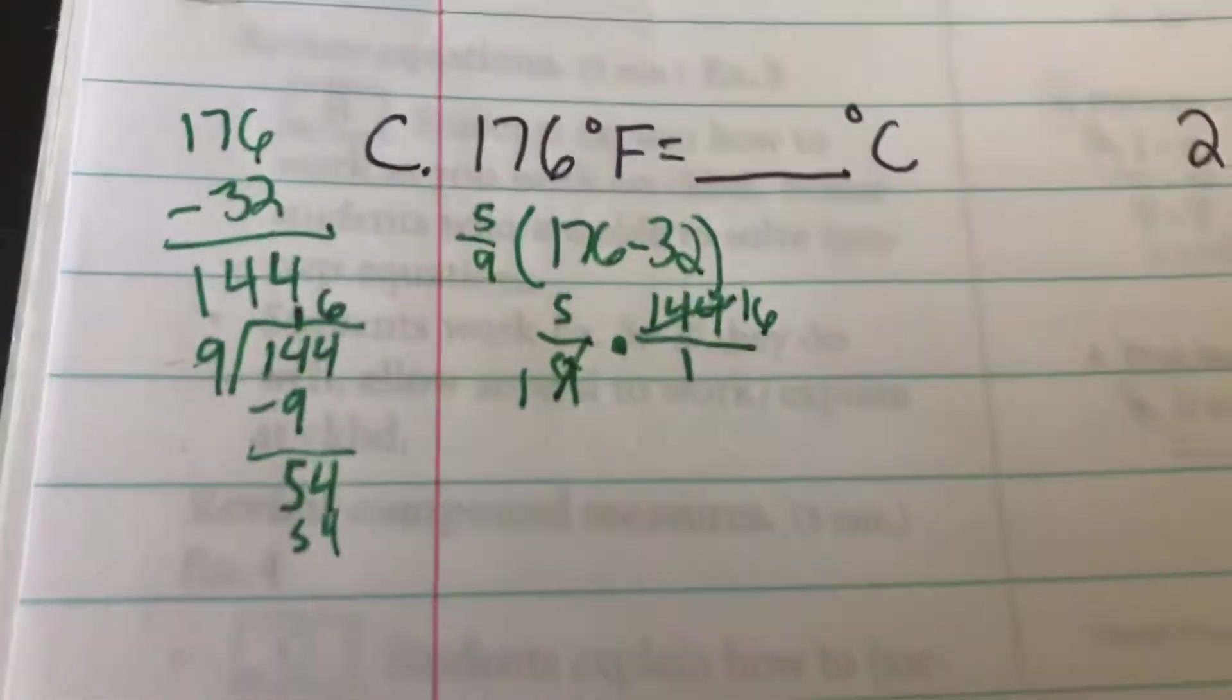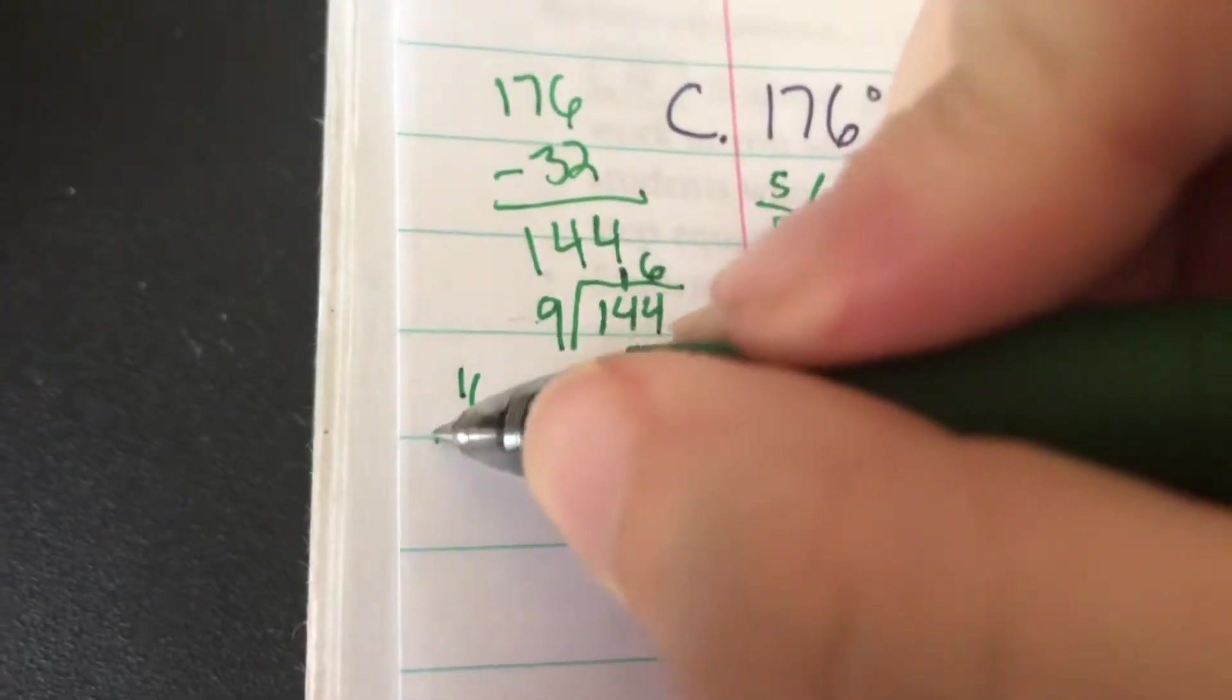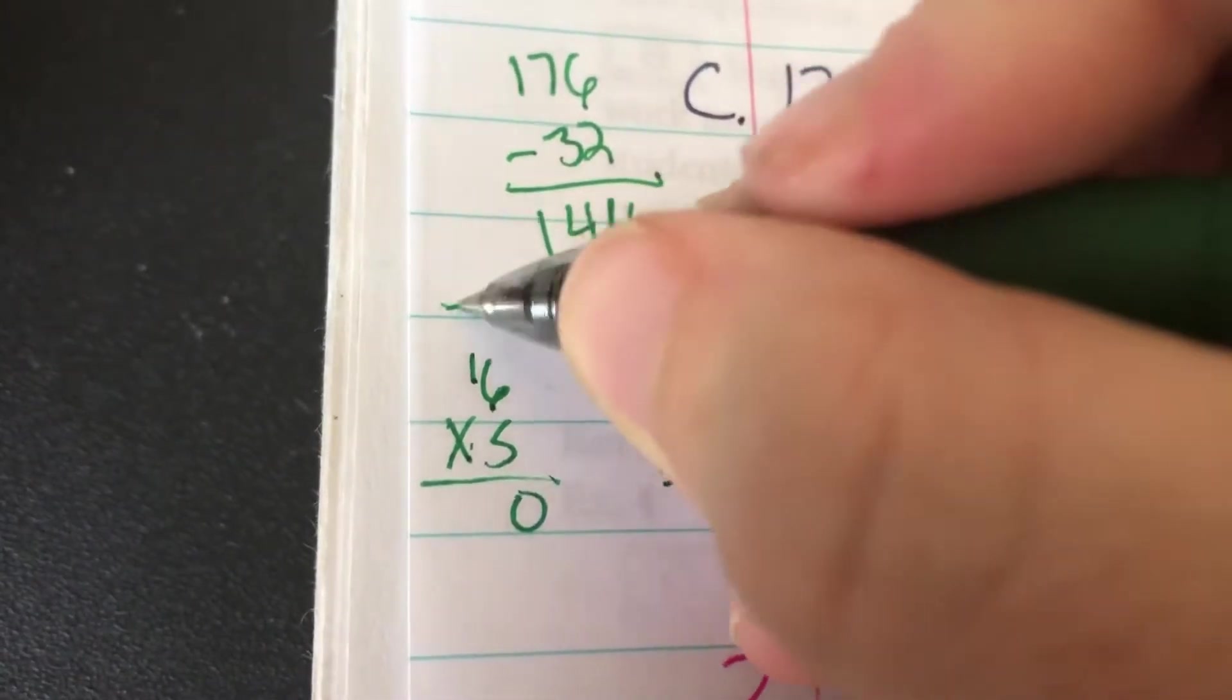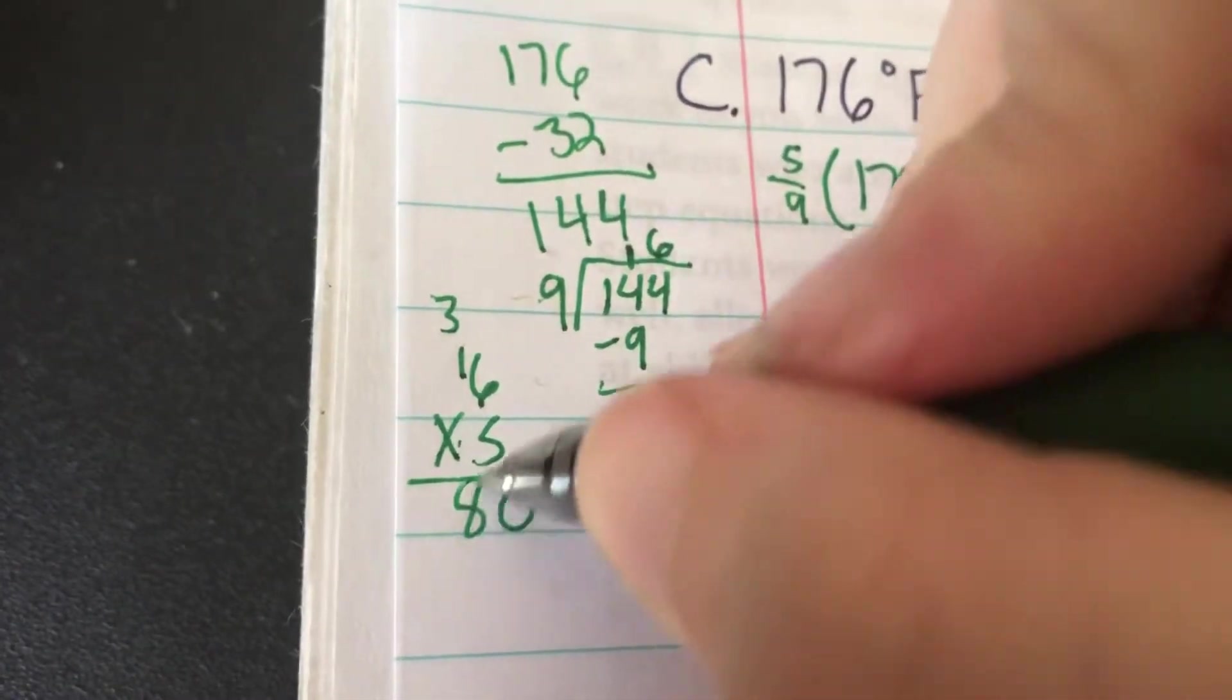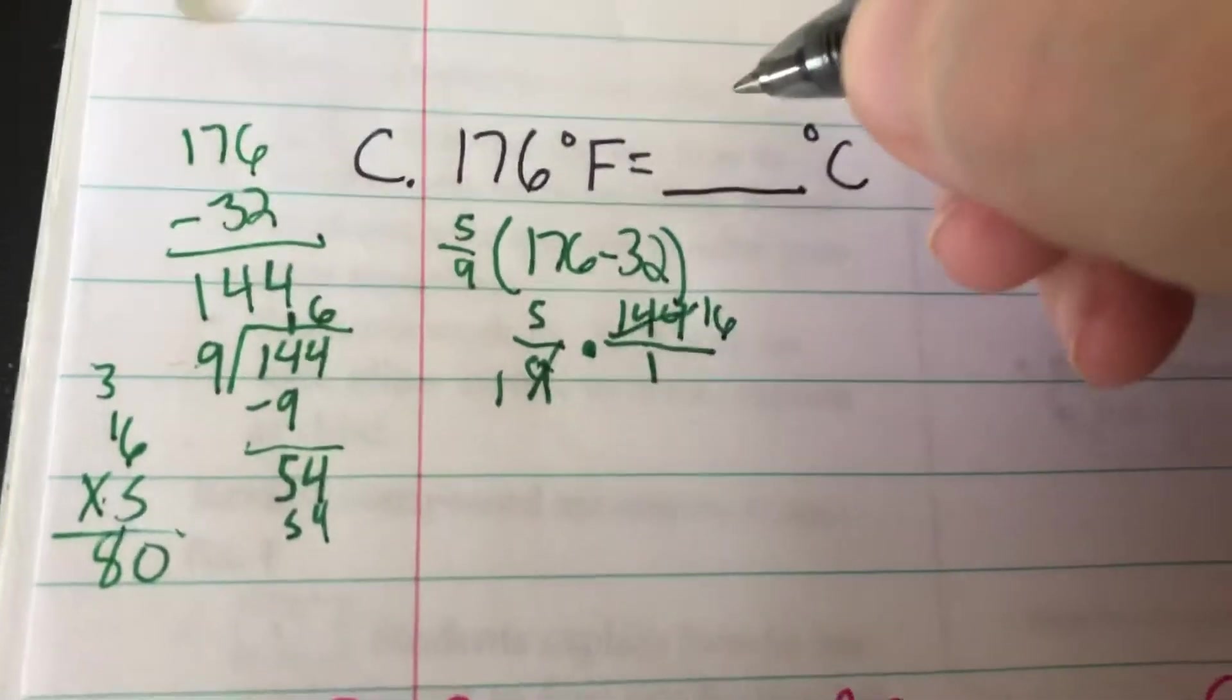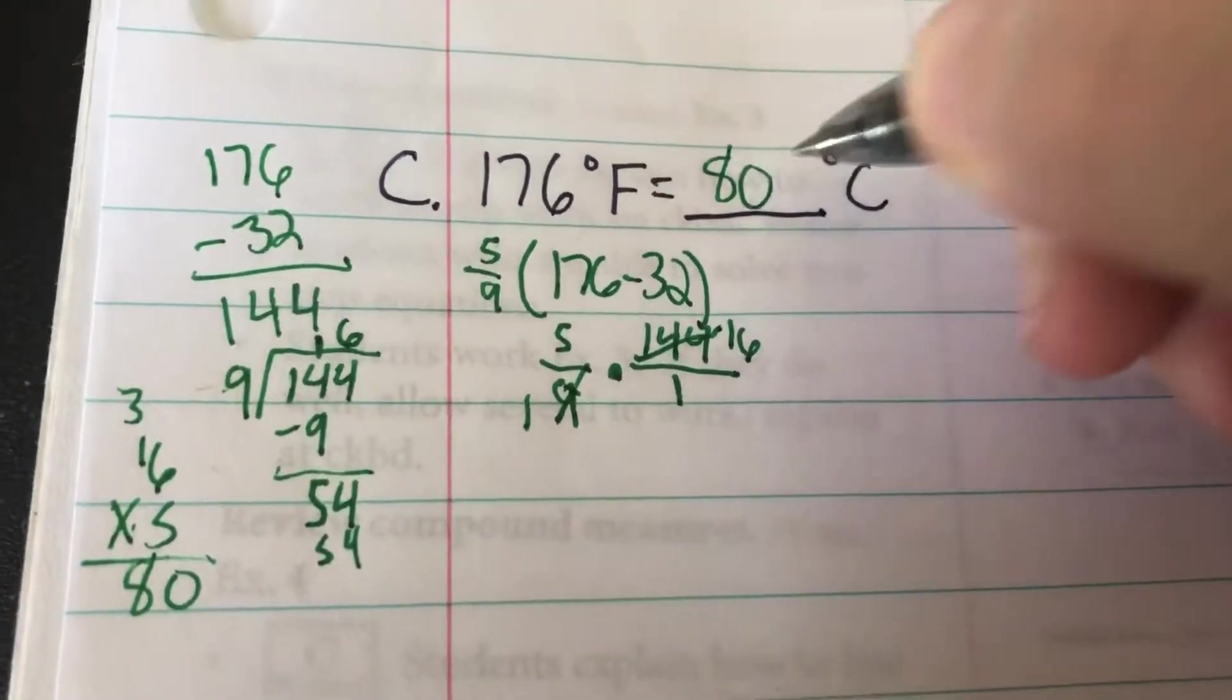Then we multiply that 5 by the 16. I'm going to go over here. 16 times 5. 5 times 6 is 30, 5 times 1 is 5, 6, 7, 8. My denominator is still 1, so it is going to be 80 degrees Celsius.